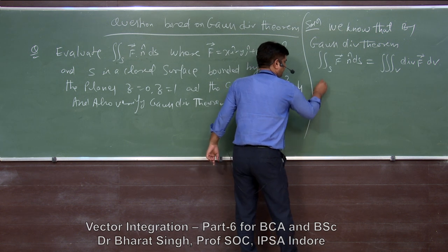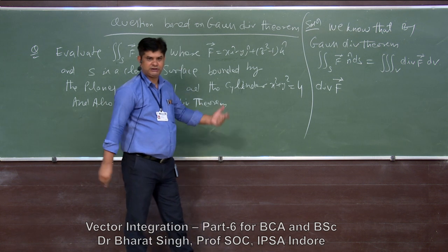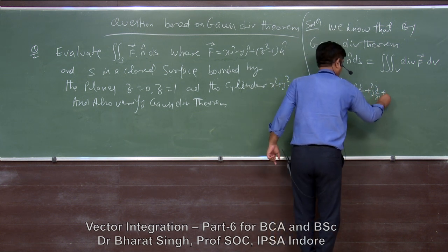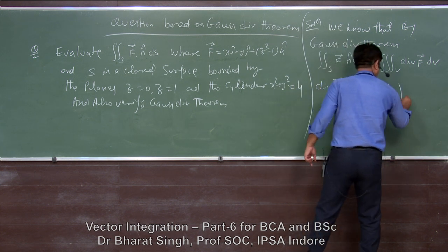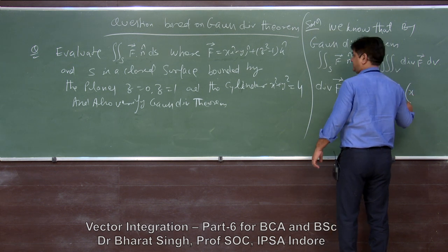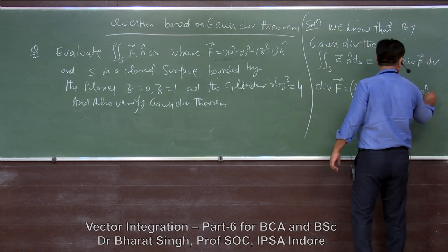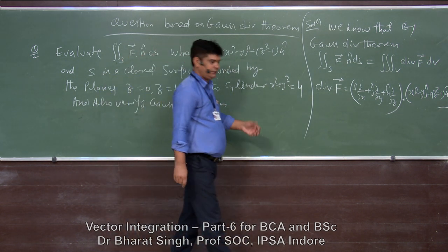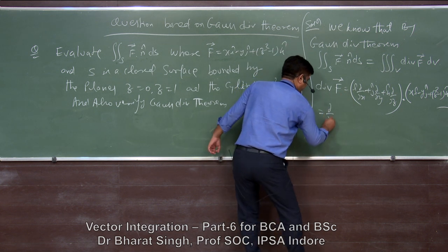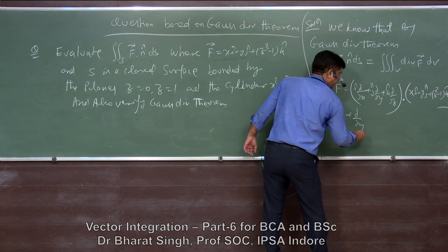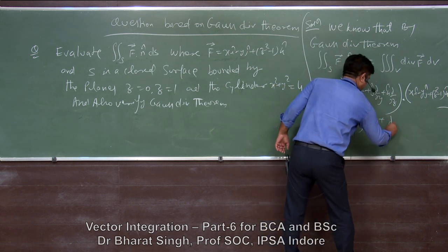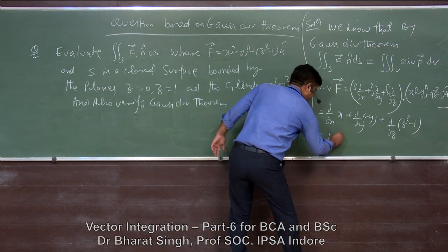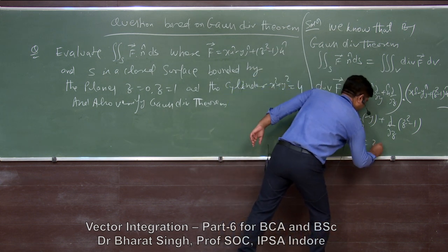For the right-hand side, we need the divergence of F-vector. Divergence of F-vector means (i ∂/∂x + j ∂/∂y + k ∂/∂z) dot F-vector, applied to x i-cap minus y j-cap plus (z² − 1) k-cap. This gives ∂/∂x(x) + ∂/∂y(−y) + ∂/∂z(z² − 1), which equals 1 − 1 + 2z = 2z.